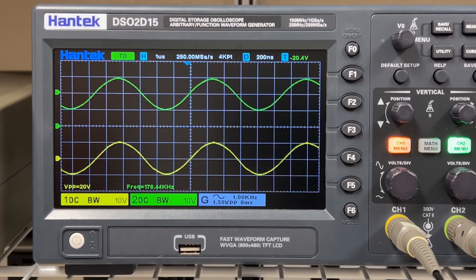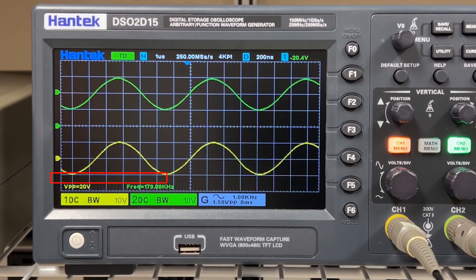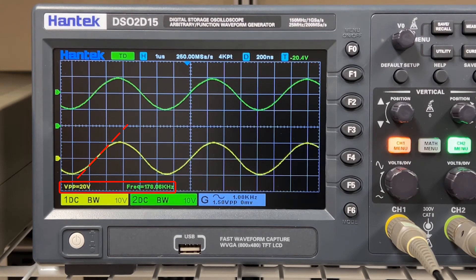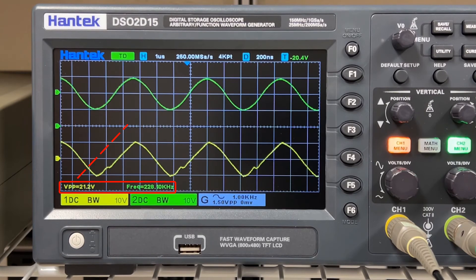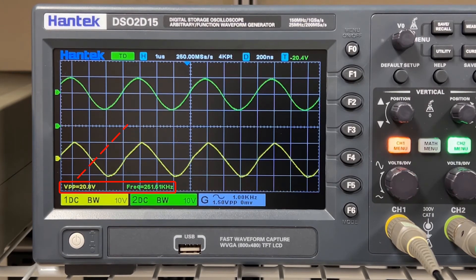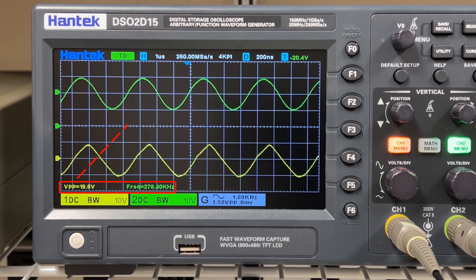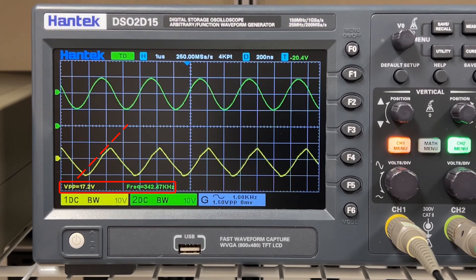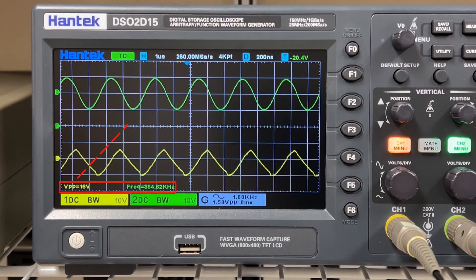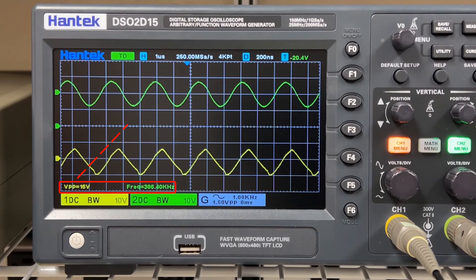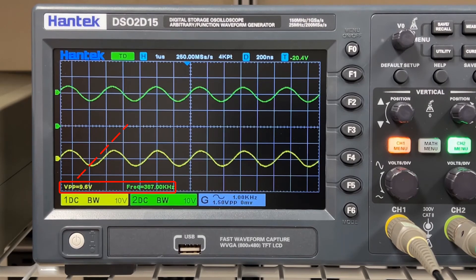The top green trace is the signal generator input, as close as I could dial for the 178.3 kilohertz, 20 volts peak to peak input and output. Note the slope of the sine wave. I'm increasing the frequency of the input. You can see it begin to distort and become triangular. Now at this higher frequency, reducing the amplitude brings the output back to an undistorted sinusoid.